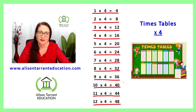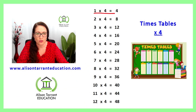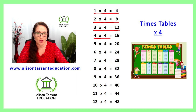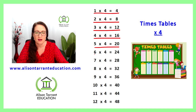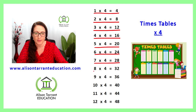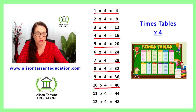Well done. Let's practice that again. 1 times 4 is 4, 2 times 4 is 8, 3 times 4 is 12, 4 times 4 is 16, 5 times 4 is 20, 6 times 4 is 24, 7 times 4 is 28, 8 times 4 is 32, 9 times 4 is 36, 10 times 4 is 40, 11 times 4 is 44, 12 times 4 is 48.